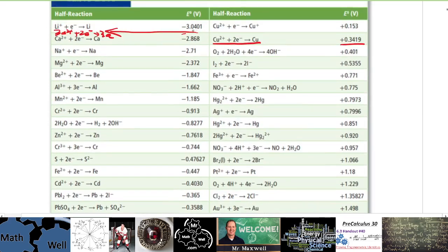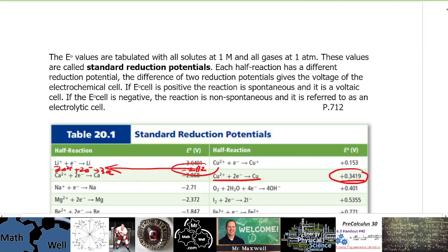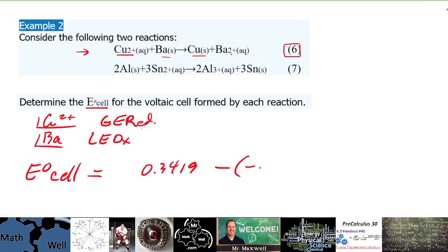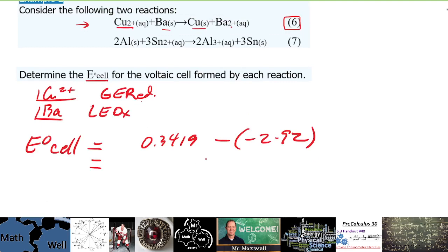So we take this number and we subtract this number. The electric potential for the cell is 0.3419. Now 0.3419 minus negative 2.92, and when we do that we get an electric cell potential of 3.26 volts.